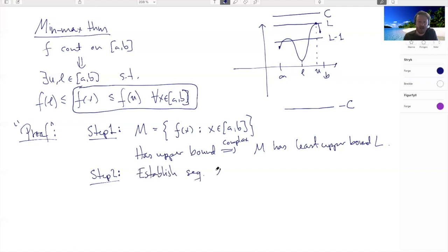we can call it x_n in [a,b], so that f at x_n is strictly bigger than L minus one over n. So here I took minus one, but you could also do the same if it took minus one over n here. And now that we have a sequence x_n, how do we use it?